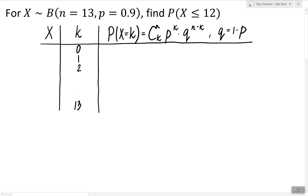We can use this formula to compute each of these probabilities one by one, so we can find the probability of X equals 0, X equals 1, X equals 2, 3, 4, 5, 6, 7, and so on.